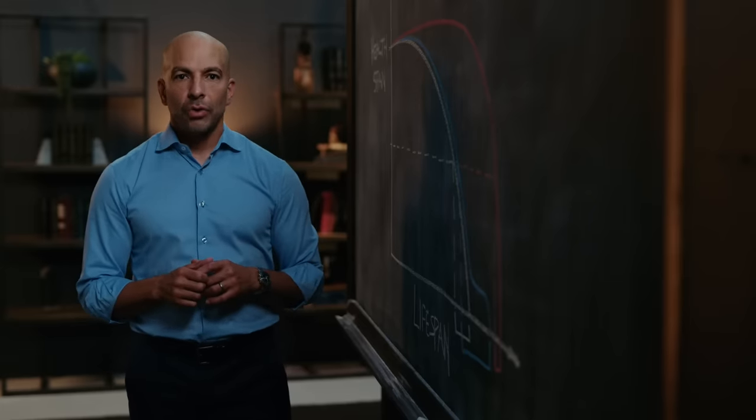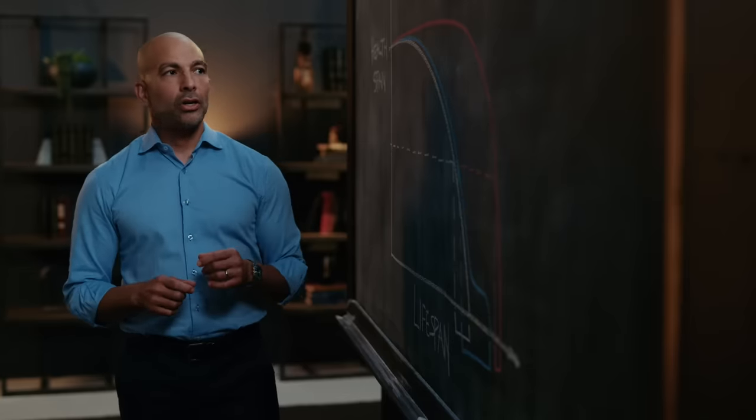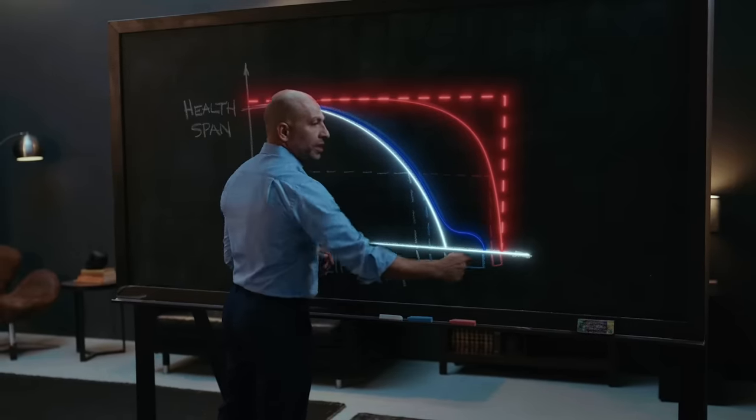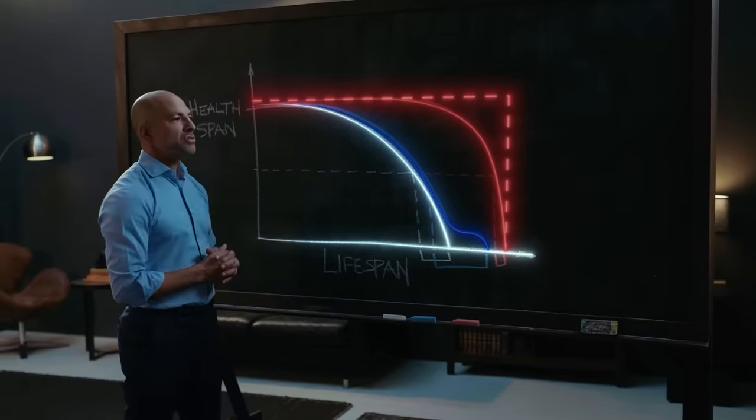In an ideal world, that red curve would be a straight line here that would drop vertically and instantaneously at the end of a person's life.